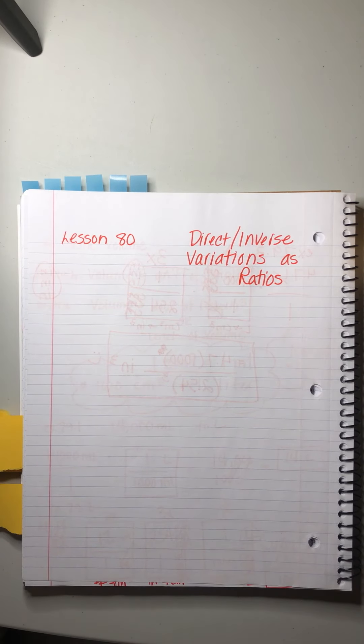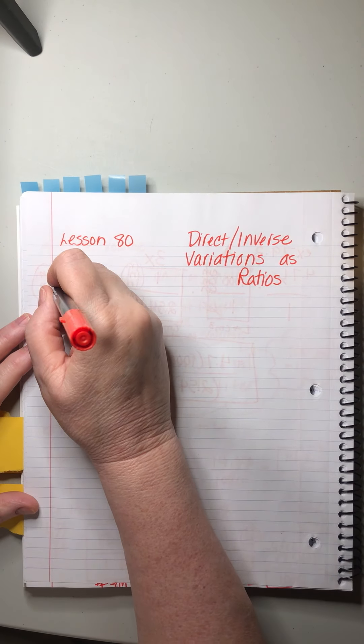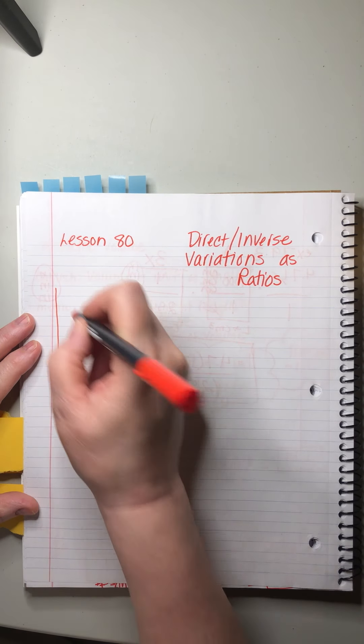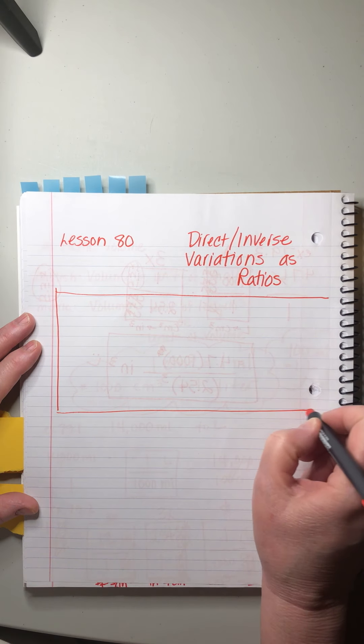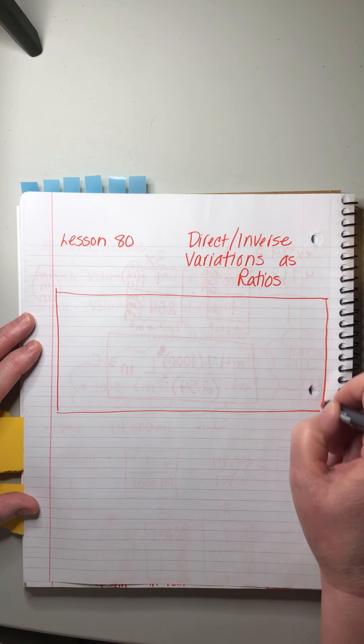Stacks in Algebra 2, Lesson 80. Direct and inverse variations as ratios. Doesn't that sound so interesting and fun? You guys, just be so excited because this is gonna be a really fun lesson. Let's start with a chart. I mean, charts are always fun, right? I get excited when I draw them.